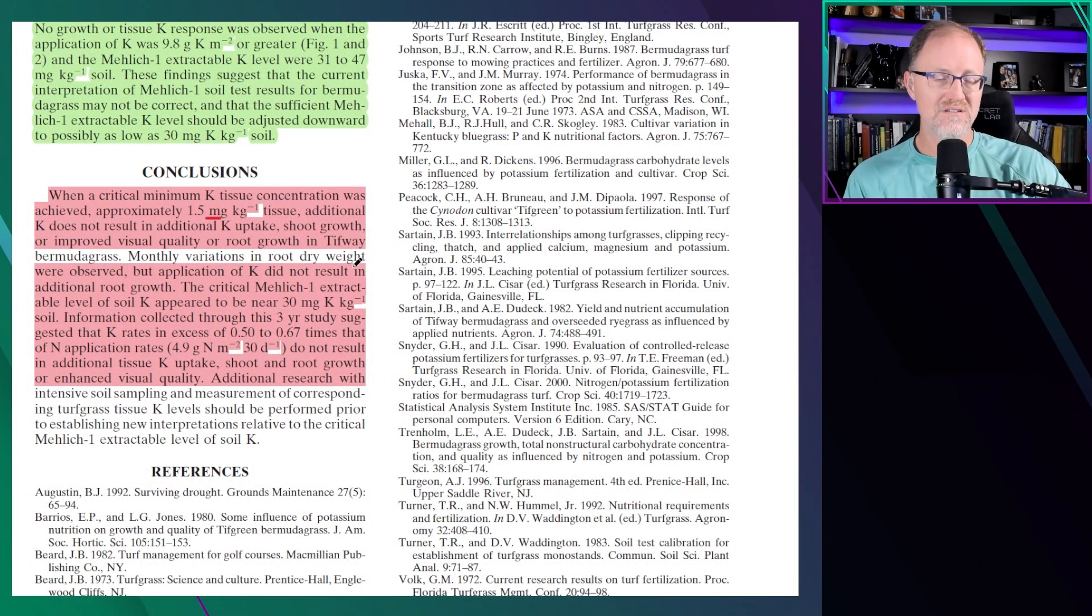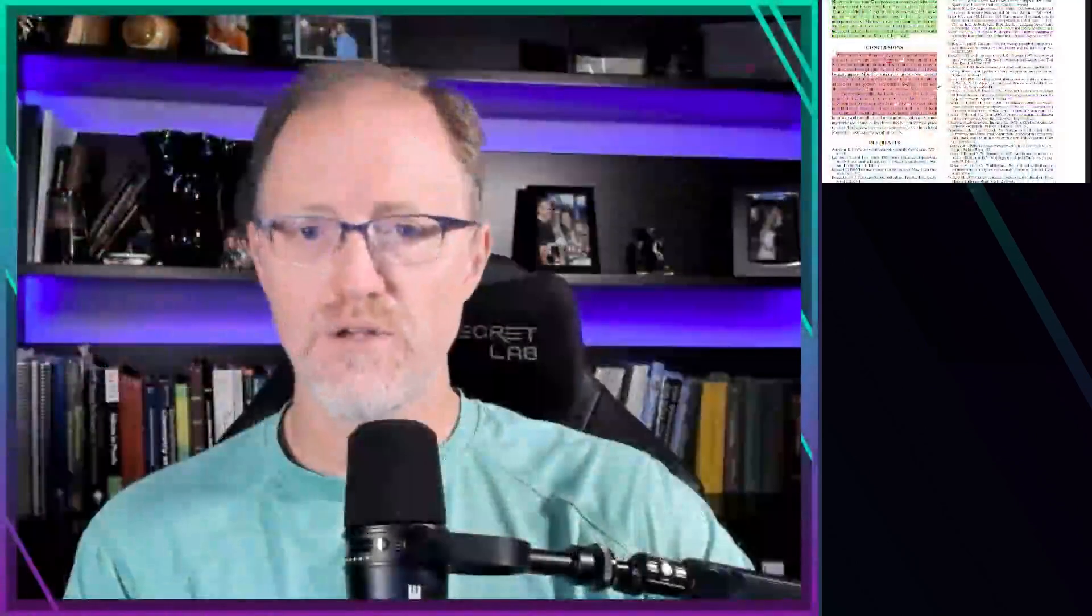Applications of potassium did not result in additional root growth beyond that. The critical Mehlich-1 extractable level of soil potassium appears to be around 30 parts per million Mehlich-1. And remember, a correlation was done on this soil between Mehlich-1 and Mehlich-3, and the Mehlich-3 was just a fraction more, so it's almost exactly the same number. So it's around 30-ish was the critical potassium level in the soil. And anything greater than that, you wouldn't expect to see a response. And anything less than that, you're very likely to see a response.